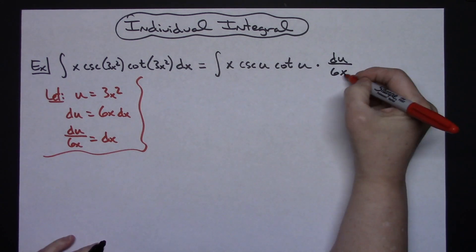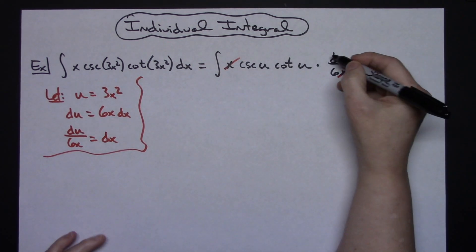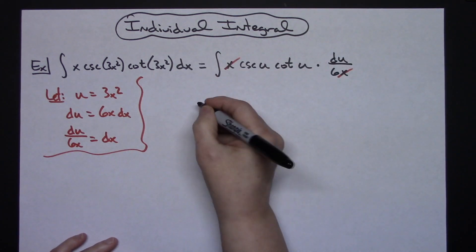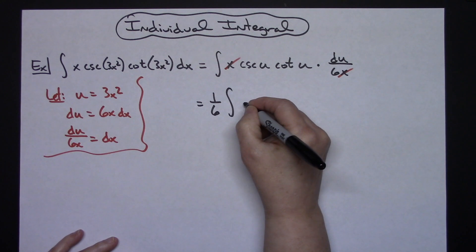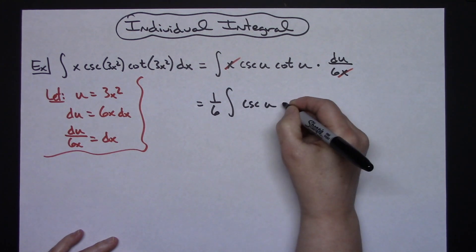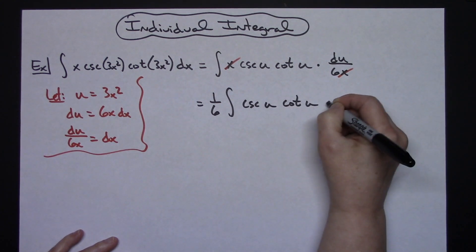That's going to allow me to cross out the x's. I will also be able to take this 1/6 and pull it out in front. So I'm going to have 1/6 integral cosecant u cotangent u du.